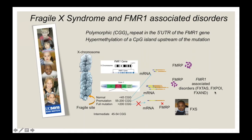Other associated disorders include fragile X-associated primary ovarian insufficiency, which is cessation of menses before age 40, observed in about 15–20% of female premutation carriers compared to 1% in the general population, and FXAND — fragile X-associated neuropsychiatric disorder — involving psychiatric problems more frequently found in premutation carriers. When the CGG repeat number goes over 200, hypermethylation of the CpG island upstream of the gene occurs, the gene becomes silenced, no FMRP is produced, and you get fragile X syndrome.